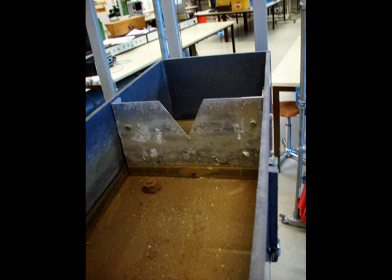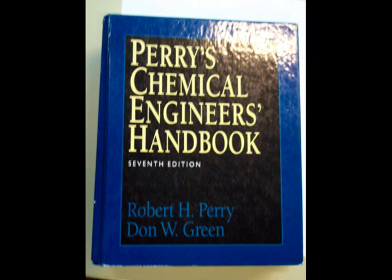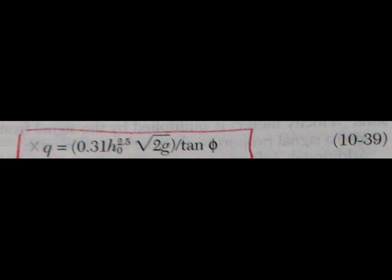If you want to measure the flow through the channel accurately you have to determine the angle of the triangular overflow. If you then go to the library you can find formula 10.38 in the Paris Chemical Handbook and that will show you how you have to calculate the flow through that channel.